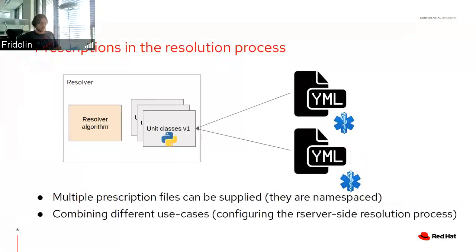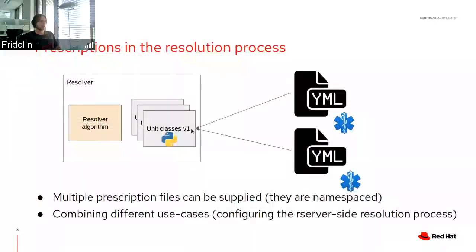Besides having one prescription file, we can supply multiple prescription files to the resolution process — we're basically not limited in how many YAML files you can supply. The limitation is memory consumption when the pipeline units are instantiated. You can maintain your own prescription file, possibly with your own packages if you're a package maintainer, and supply the configuration to the resolution process. Prescriptions do not collide — they are namespaced — and you can configure your deployment of Thoth accordingly.